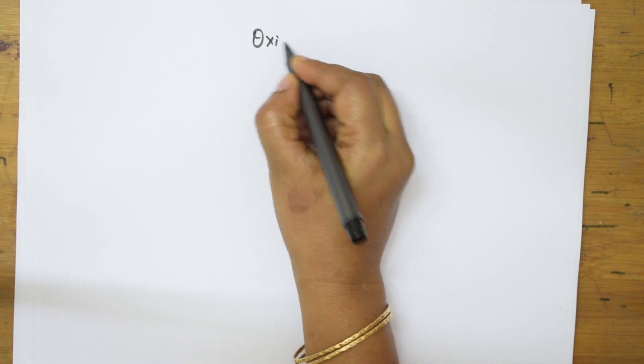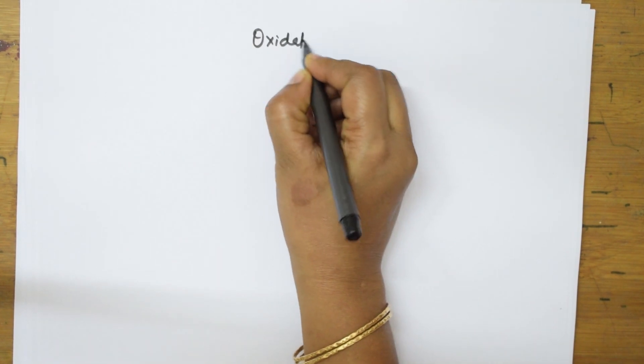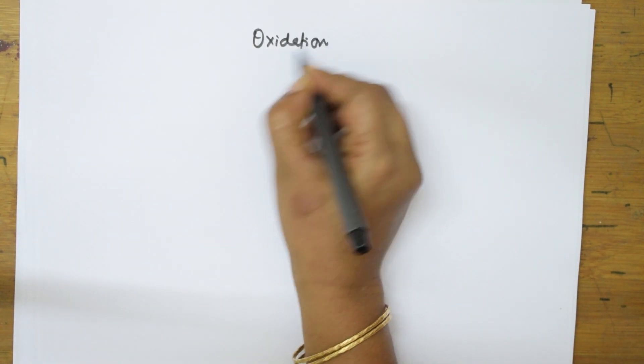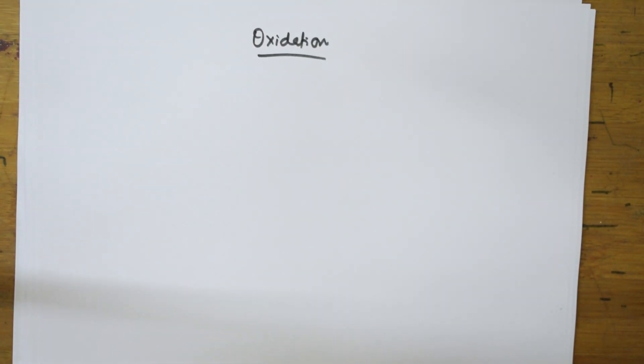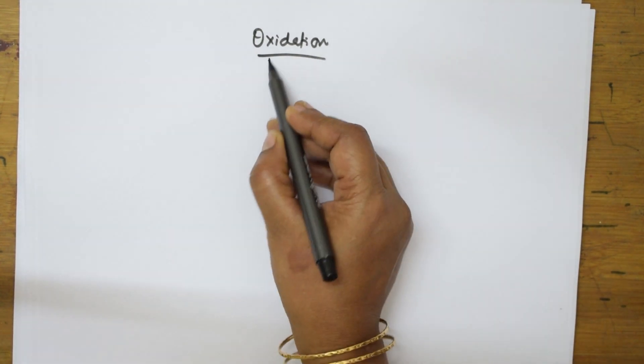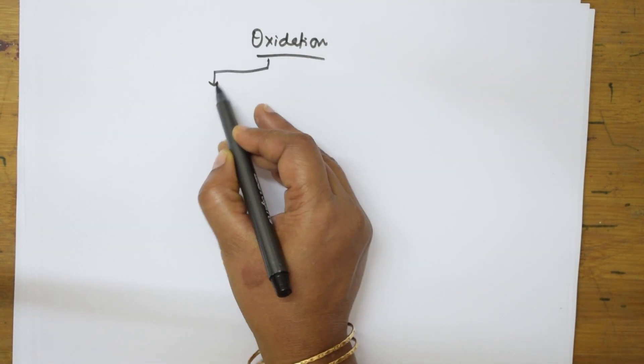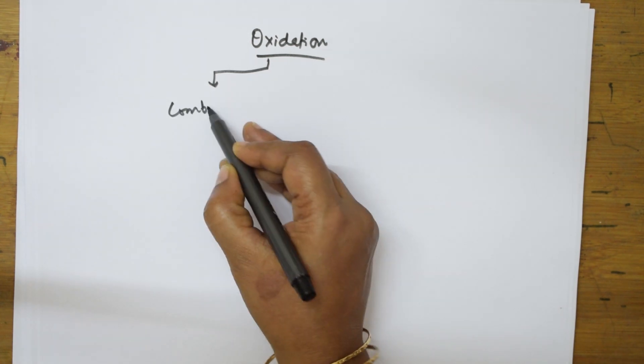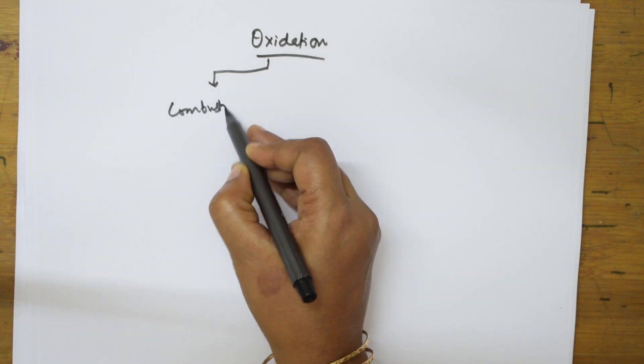Welcome back students. Let us start with the next type of reaction of alkynes, that is oxidation reaction. After nucleophilic addition reactions, we will come back to this concept of oxidation. Oxidation is nothing but addition of oxygen. We can study this under the heading combustion reaction.